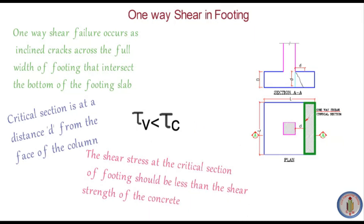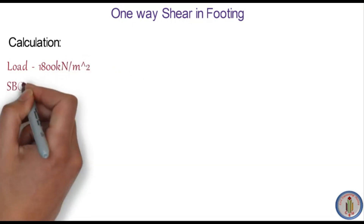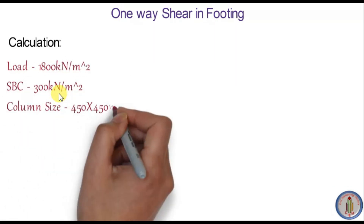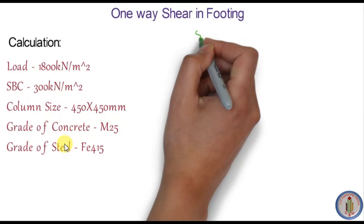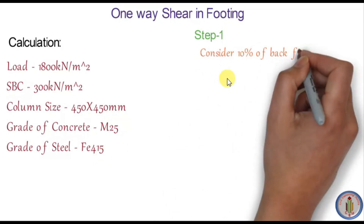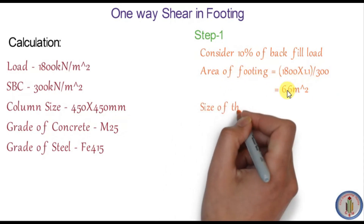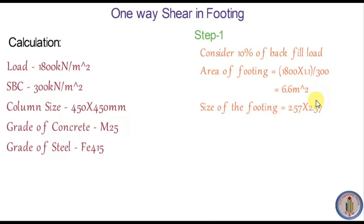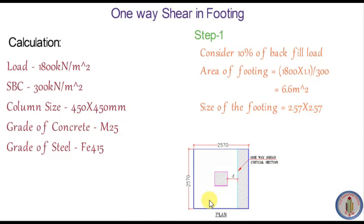Let's take one practical example and do the calculation. The load is 1800 kN, SBC is 300 kN/m², column size is 450×450 mm, grade of concrete is M25, and grade of steel is Fe415. The first step is to find the area of the footing, considering 10% backfill load. Area of footing equals load divided by SBC, giving a footing size of 2.57×2.57 m.